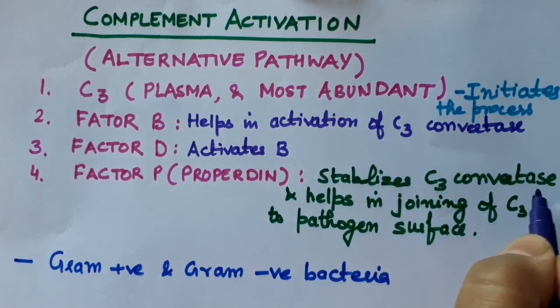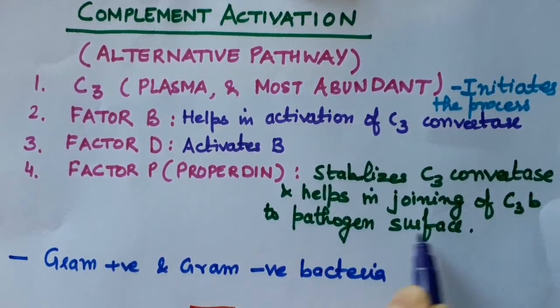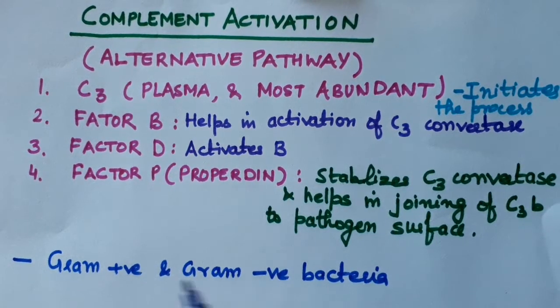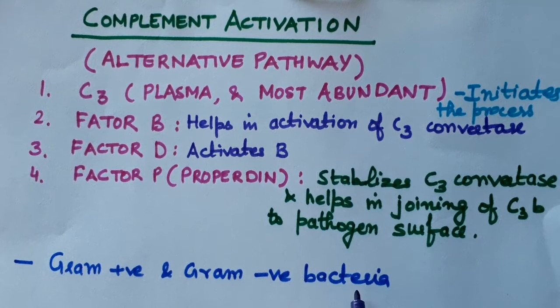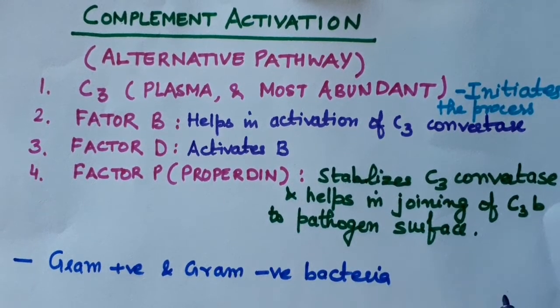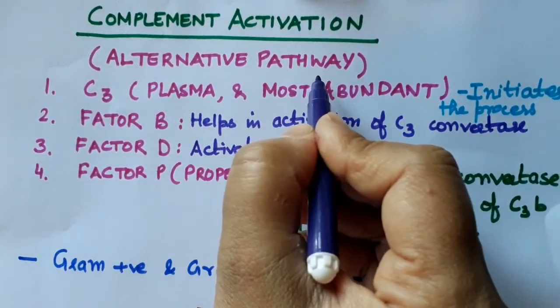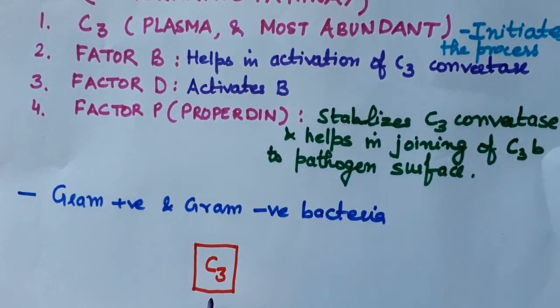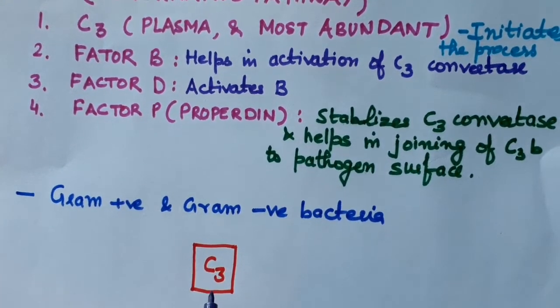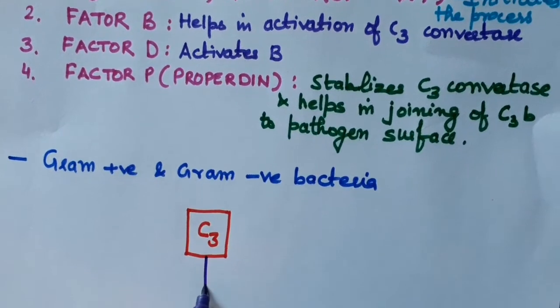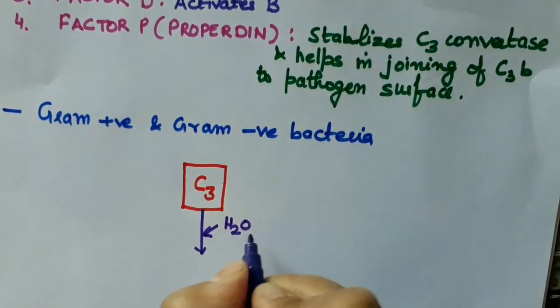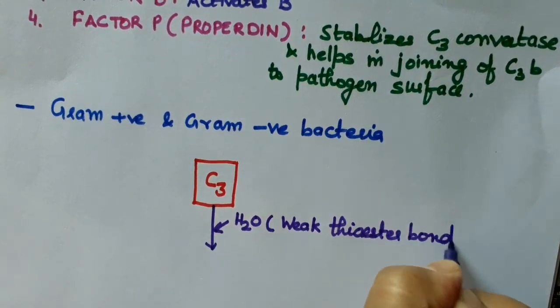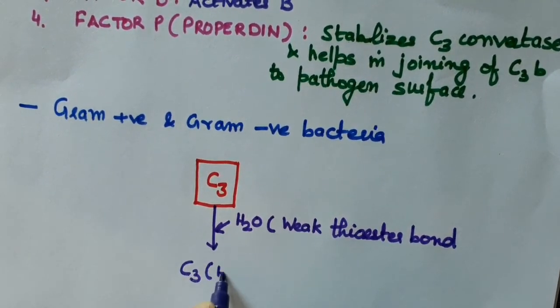Factor P helps in joining of C3B to the pathogen surface. This alternative pathway activates in case of bacteria such as gram-positive and gram-negative bacteria which have certain constituents in their cell wall. C3 is the most abundant protein in plasma. This protein undergoes hydrolysis in presence of water as it contains a weak thioester bond, converting into C3H2O.